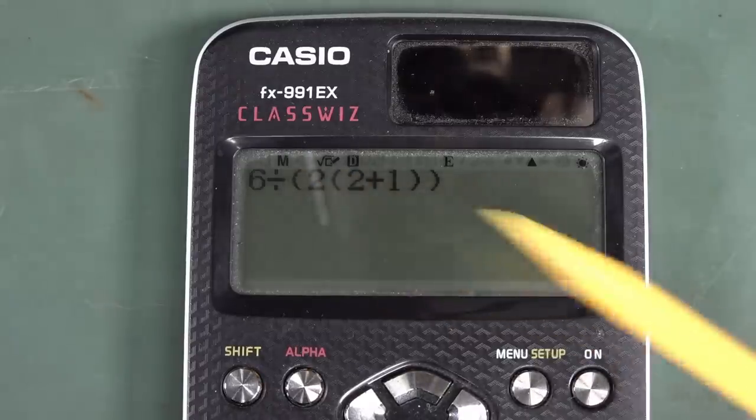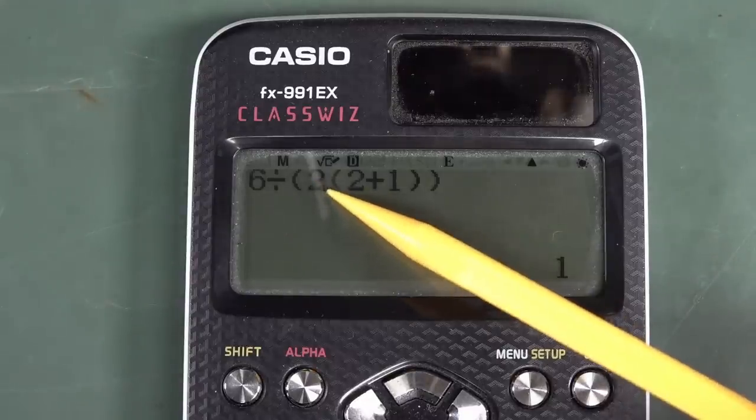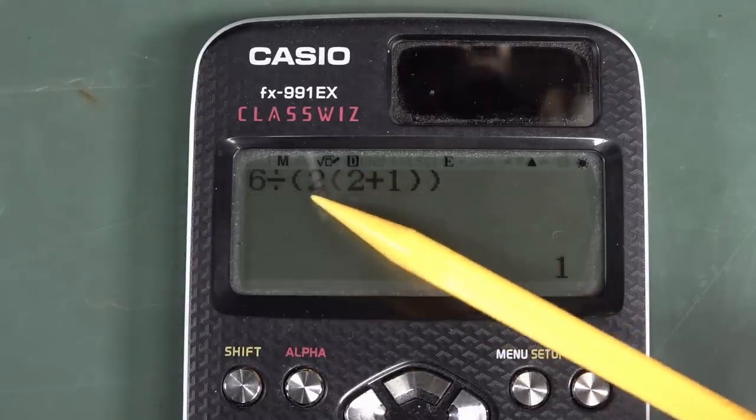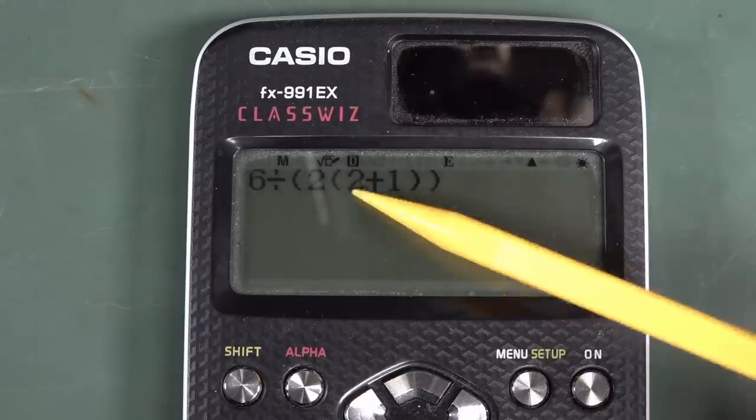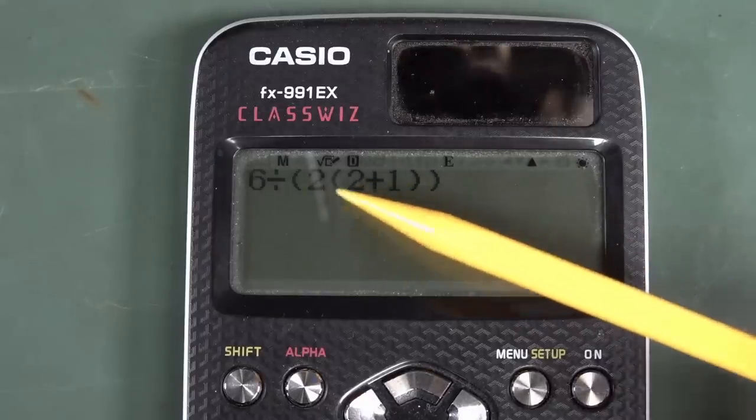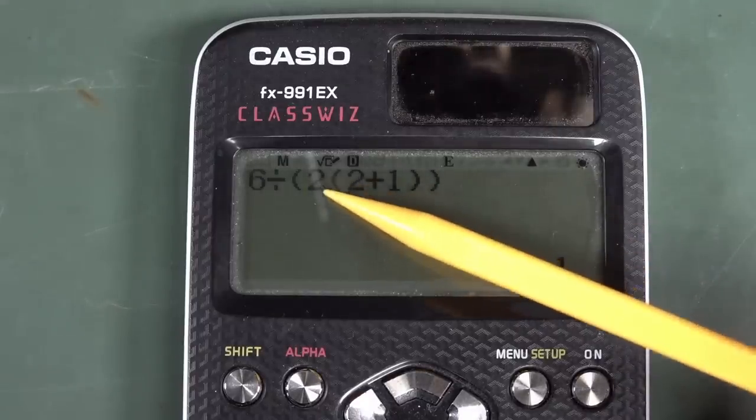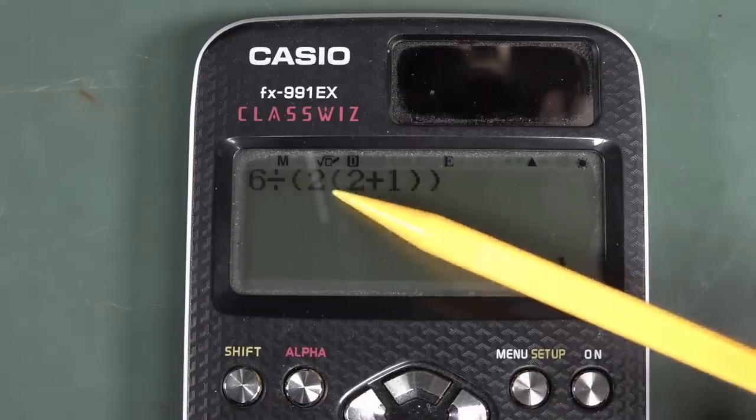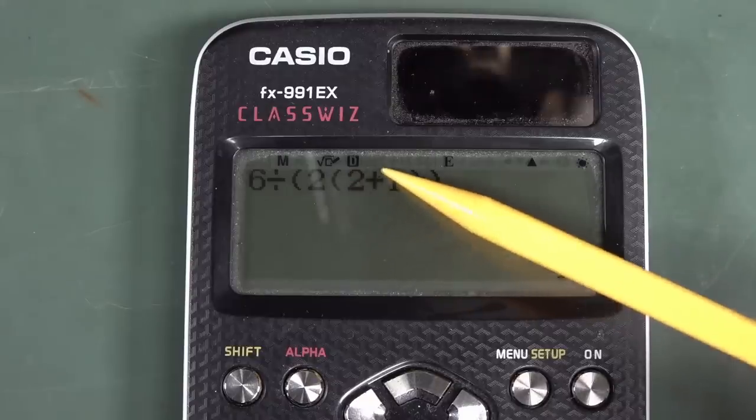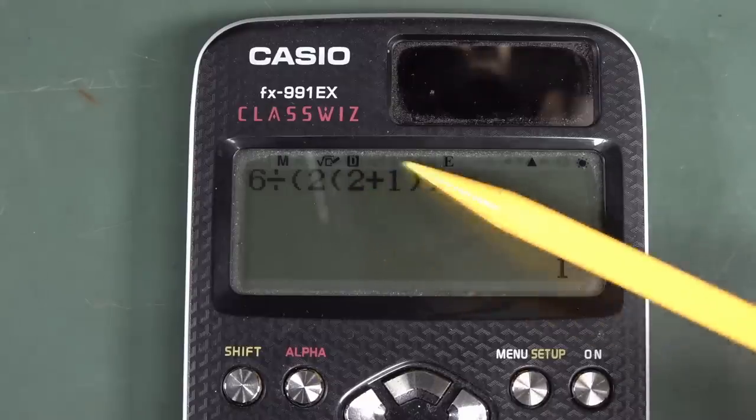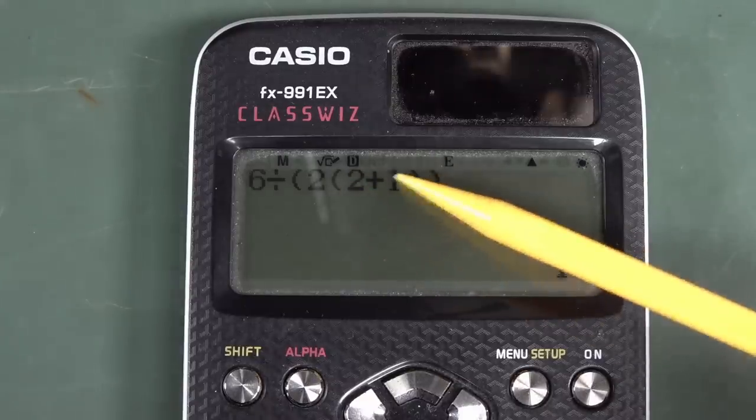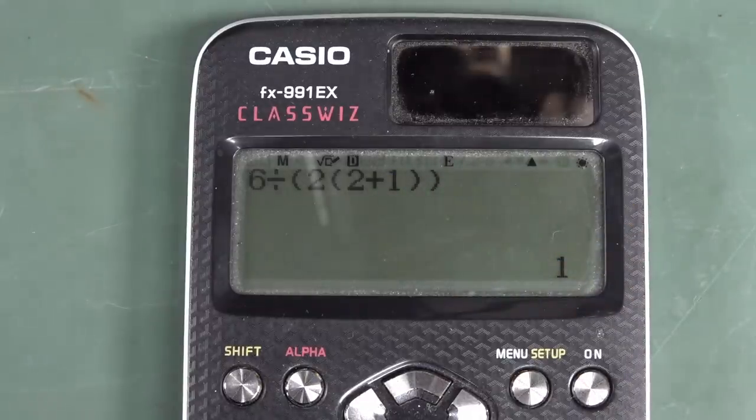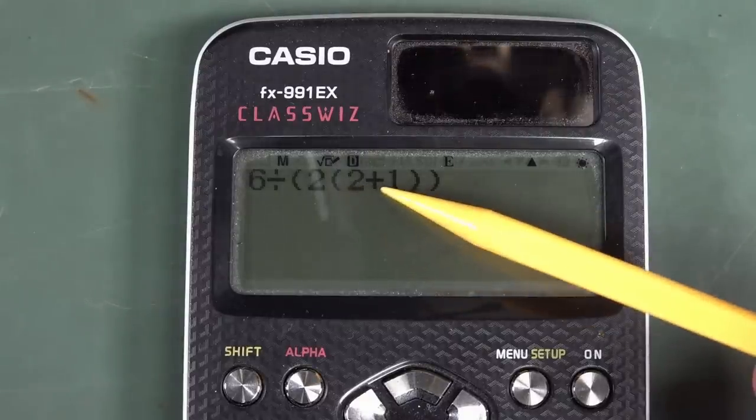So it's added the parentheses here. So what it's decided is that it's more important to evaluate this parentheses first before doing 6 divided by 2. And that's why you get the answer 1, because 2 multiplied by 3 here is 6. Again, we actually have an implied multiplication in here, but because we've got the parentheses around here, it's not going to make a difference.